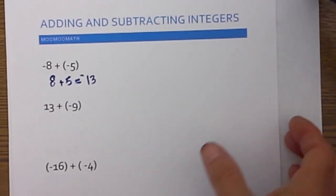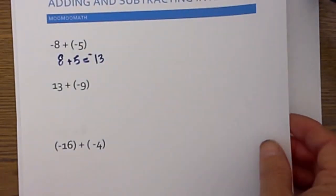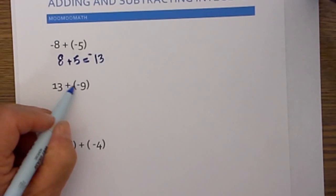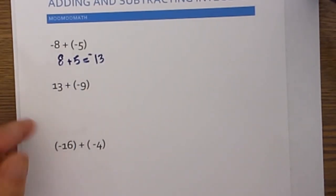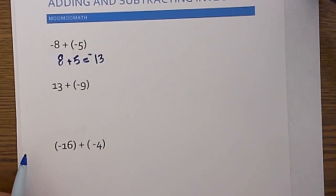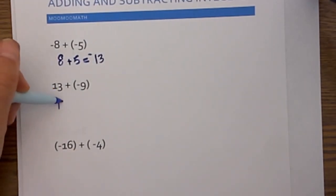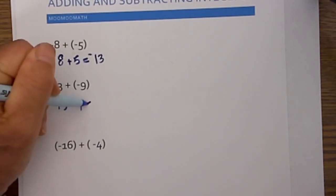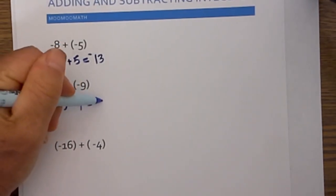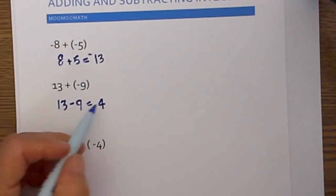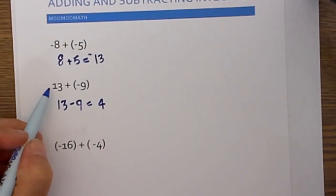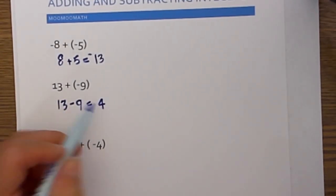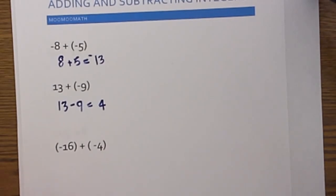Let's apply the flowchart to another question: 13 plus negative 9. Is the problem addition? Yes. Are the signs the same? No — so subtract the smaller number from the larger number. 13 minus 9 is 4, and then take the sign of the larger number, which is 13, so it becomes positive 4.